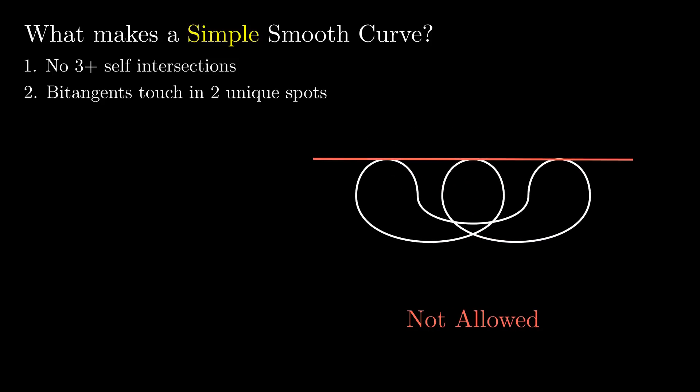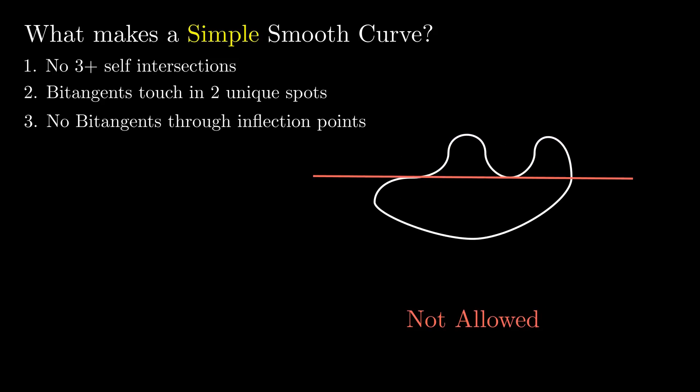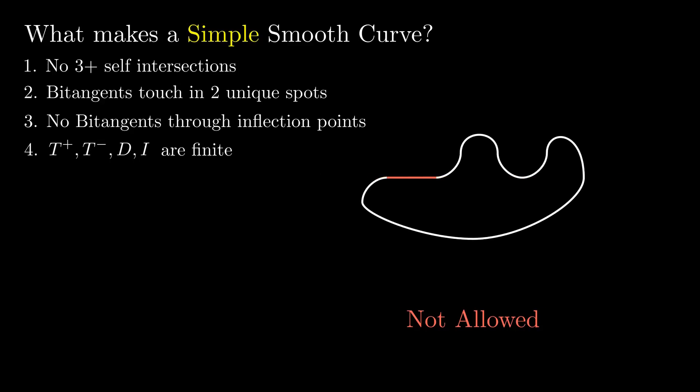And also when I say exactly two places, that means we can't have any multi-tangent lines, which are tangent at three or more places. We also can't have a bitangent pass through an inflection point, because then it wouldn't be a positive bitangent or a negative bitangent. And lastly, all the quantities need to be finite, which basically amounts to not having any perfectly straight sections in our curve.